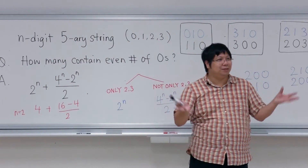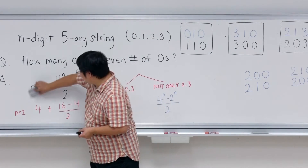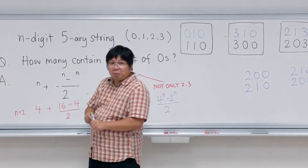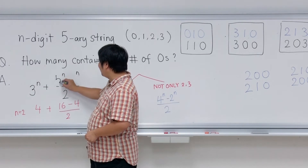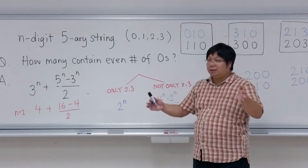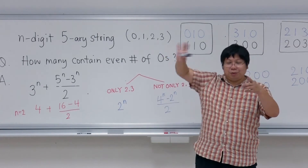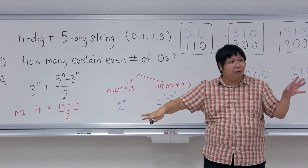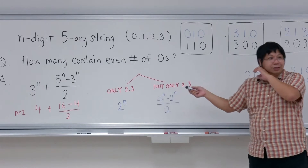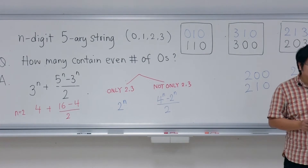Check your understanding: how about quinary (base-5) strings? For five-digit strings, each digit can be zero, one, two, three, or four. I guess the answer will be (5^n + 3^n) / 2, because you isolate the group of strings with only digits two, three, four — that's 3^n strings — and then exactly half of the rest have even zeros.